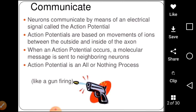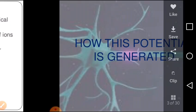When an action potential occurs, a molecular message is sent to the neighboring neuron. Action potential is an all-or-none process, like a gunfire.